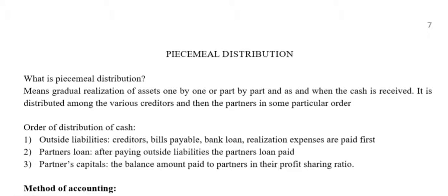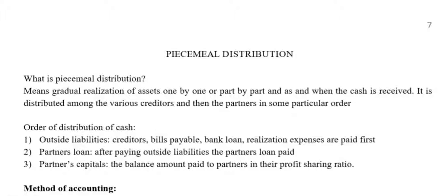Now moving to the next topic in this unit — Piecemeal Distribution. What is Piecemeal Distribution? Piecemeal Distribution means gradual realization of assets one by one or part by part, and as and when cash is received, it is distributed among the various creditors and then partners in a particular order. How is the distribution made? First, outside liabilities are to be paid. Second, partners' loan. Third, partners' capitals.